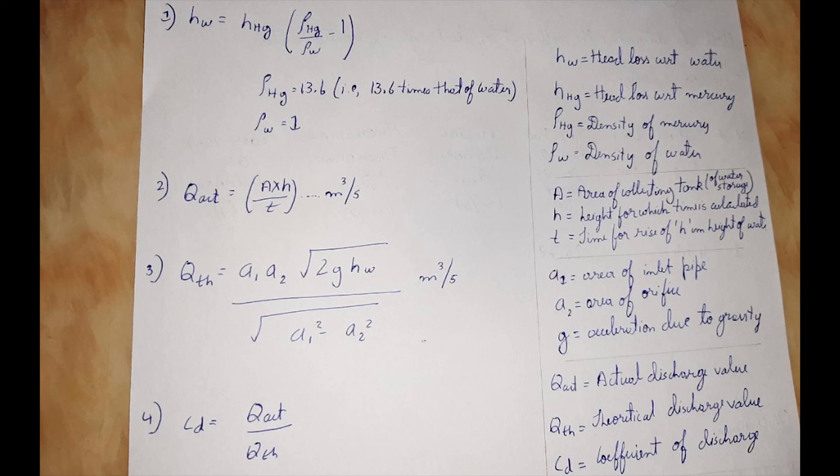Q is the actual discharge. A is the area of the collecting tank, that is the actual area, which is area of the tank minus area of the pipe used to drain the water once it crosses the limit. H is the height for which time is calculated. T is the time taken for rise of h centimeter of water.